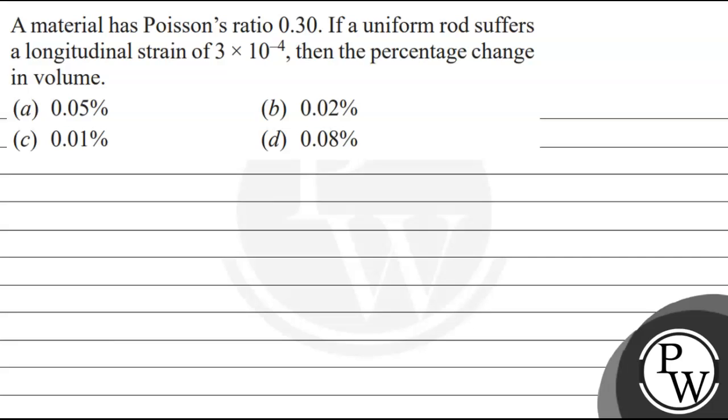Hello, let's read this question. The question says that a material has Poisson's ratio 0.30. If a uniform rod suffers a longitudinal strain of 3 into 10 to the power minus 4, then the percentage change in volume. Options are 0.05%, 0.02%, 0.01%, 0.08%.